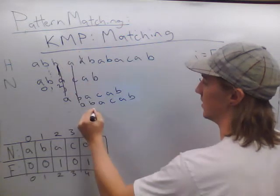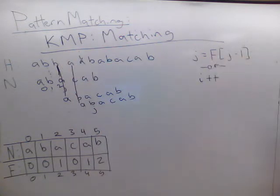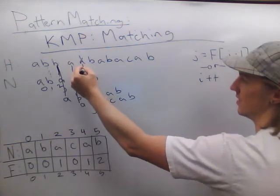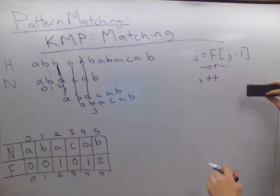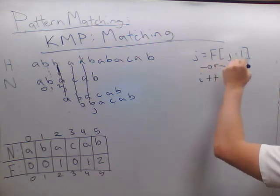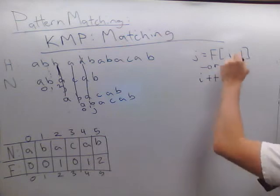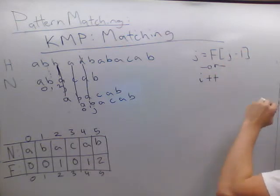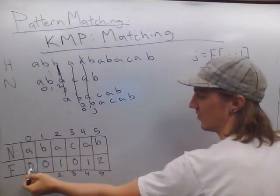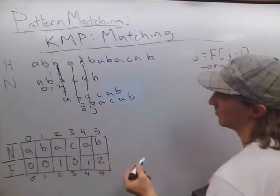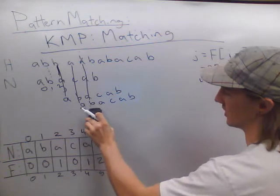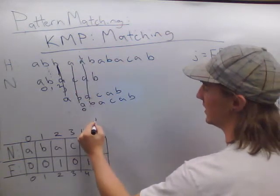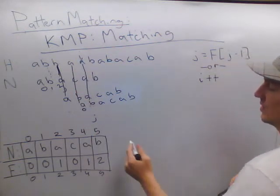i and j advance, and we see that a and b are not equal. Since j is greater than zero — j equals one — we look up the failure function at one minus one, which is index zero. The failure function at index zero is also zero. So j is set to zero, we shift our needle so i and j stay lined up, and we start matching again at index zero.